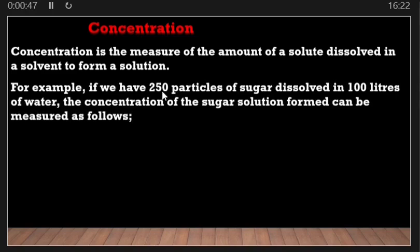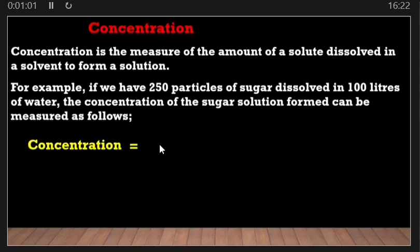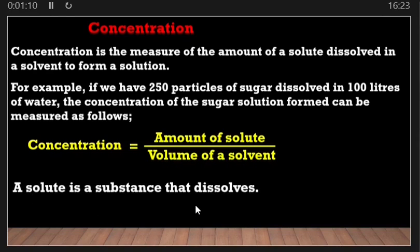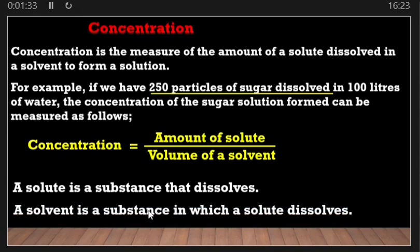For example, if we have 250 particles of sugar dissolved in 100 liters of water, the concentration of the sugar solution formed can be measured using the formula: concentration is equal to amount of solute divided by volume of solvent. In this case, a solute is the substance that dissolves — so sugar is the solute — and a solvent is the substance in which the solute dissolves, so water is the solvent.